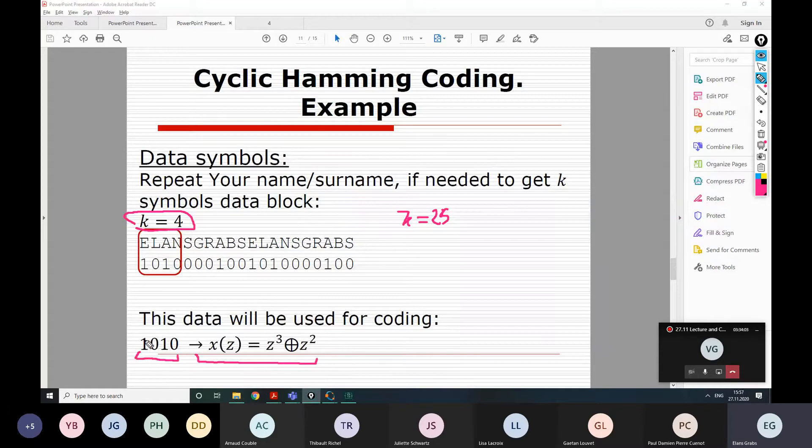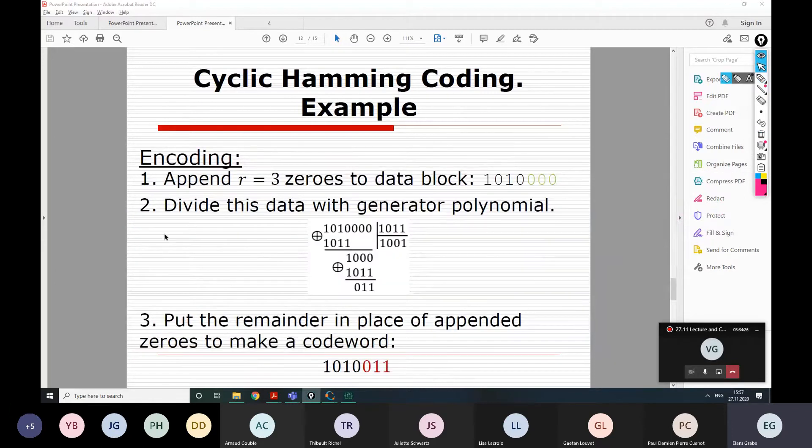If you need, you can convert it into the polynomial as well. That would be the highest degree, 3, second degree, first, and 0. So, 1s are located only in the third and first degrees. That would be Z3 plus Z in my case. However, I am going to use the binary form, and let me remind you once more how to perform the calculation for the codeword.